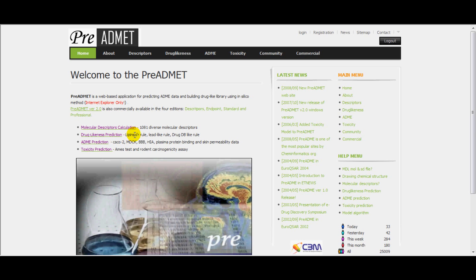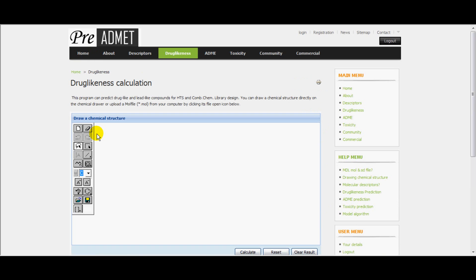A compound is druggable when it is suitable for rules such as CMC-like rule, LEAD-like rule, Lipinski rule, MDDR-like rule, and WDI-like rule. All the above rules have some conditions of molecular weight, number of rotatable bonds, number of rings.